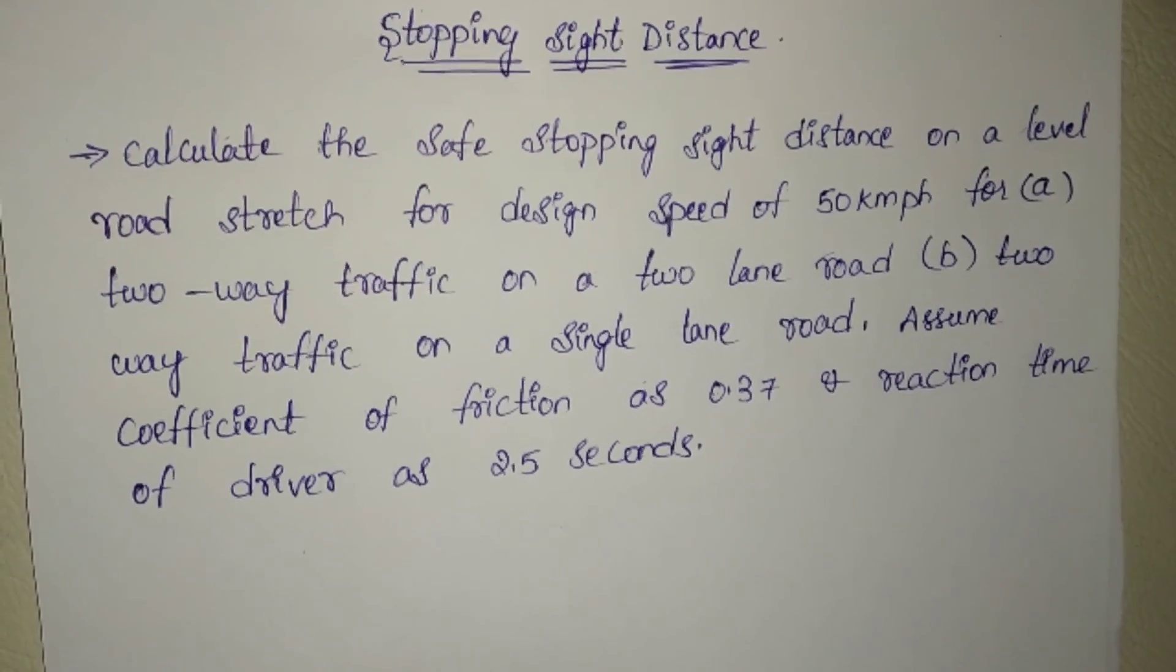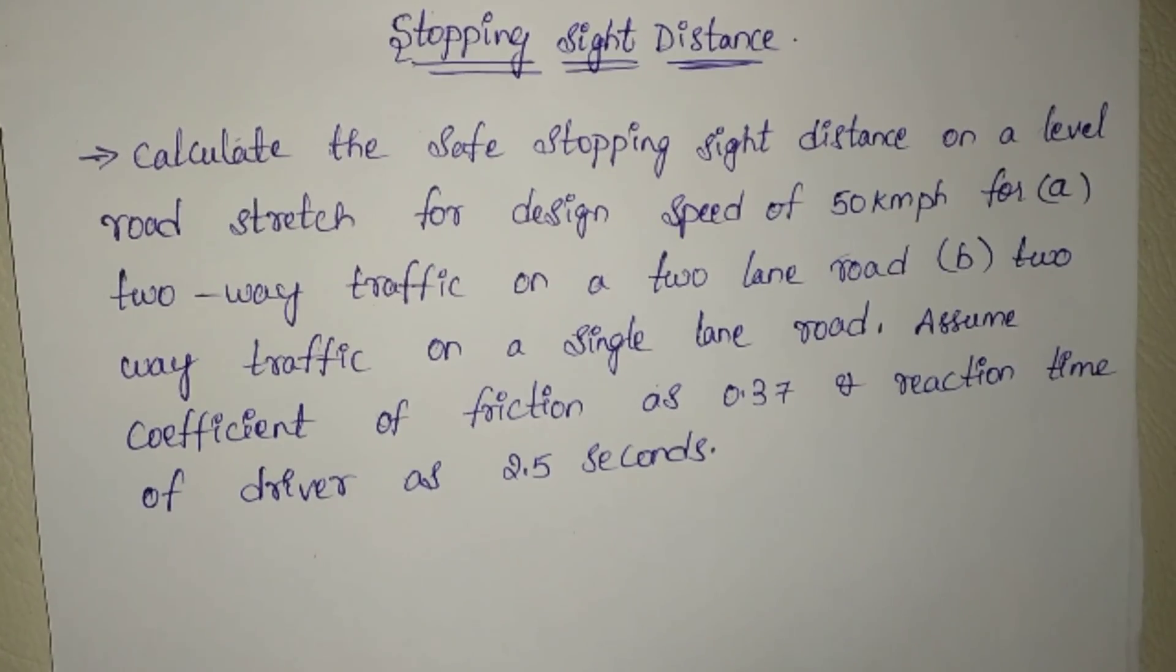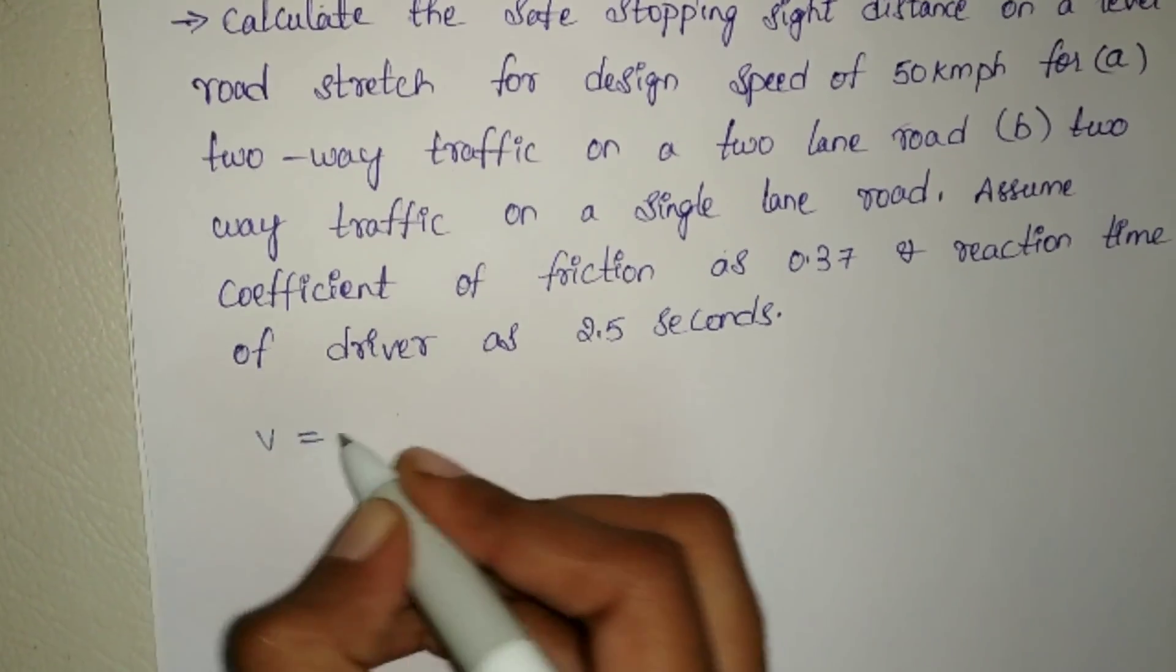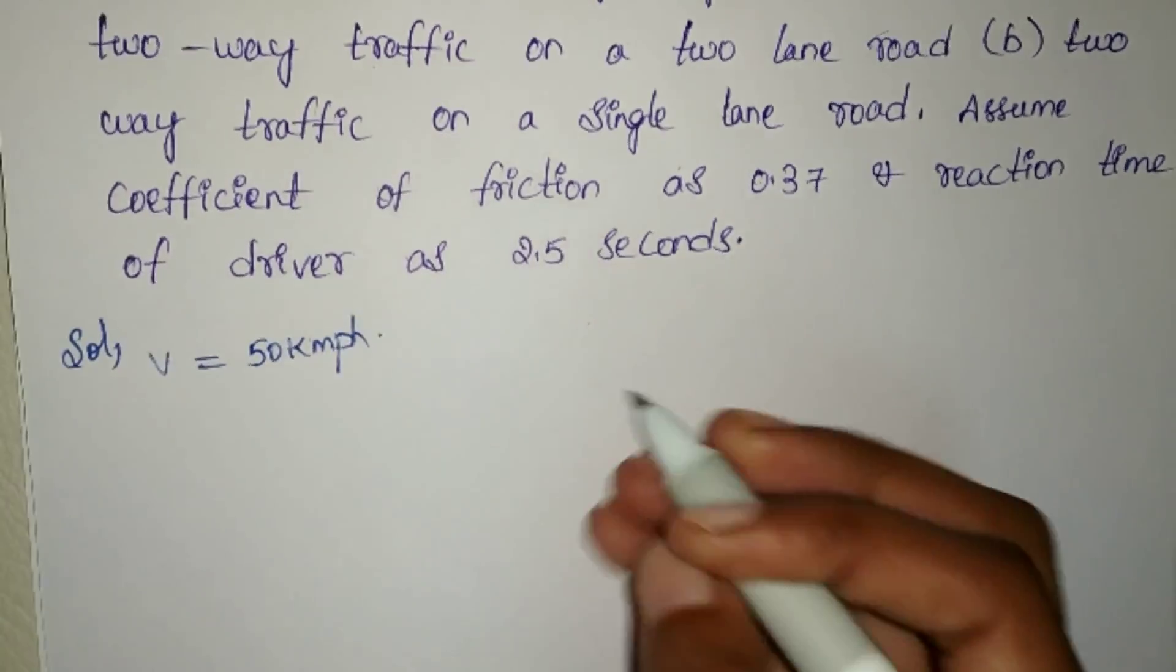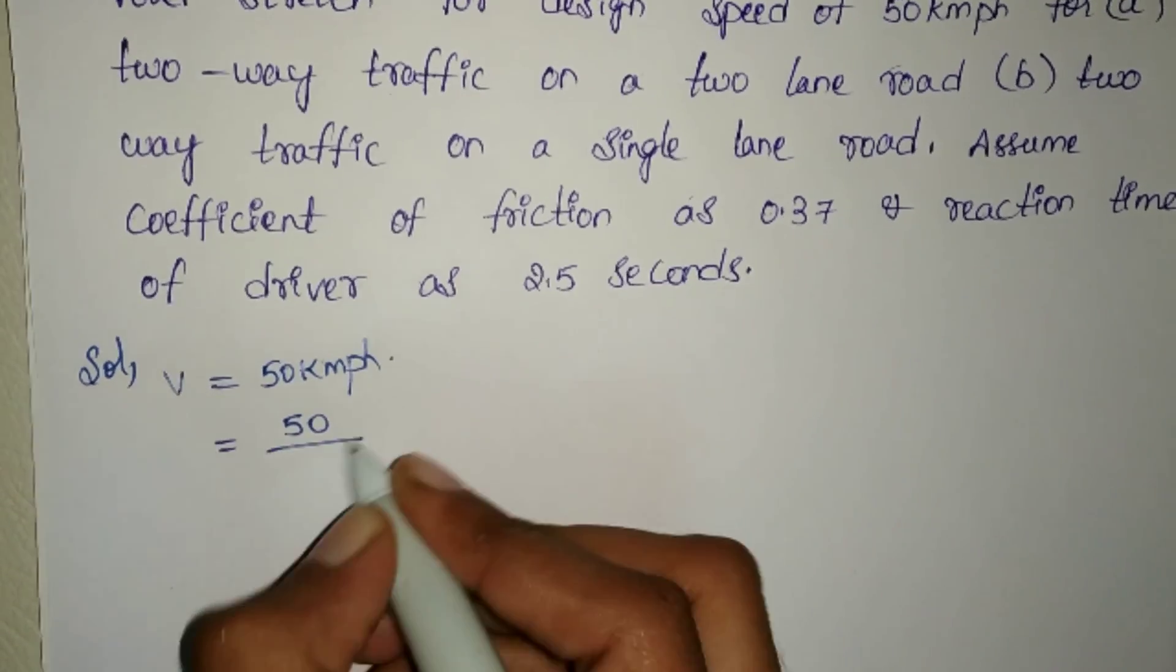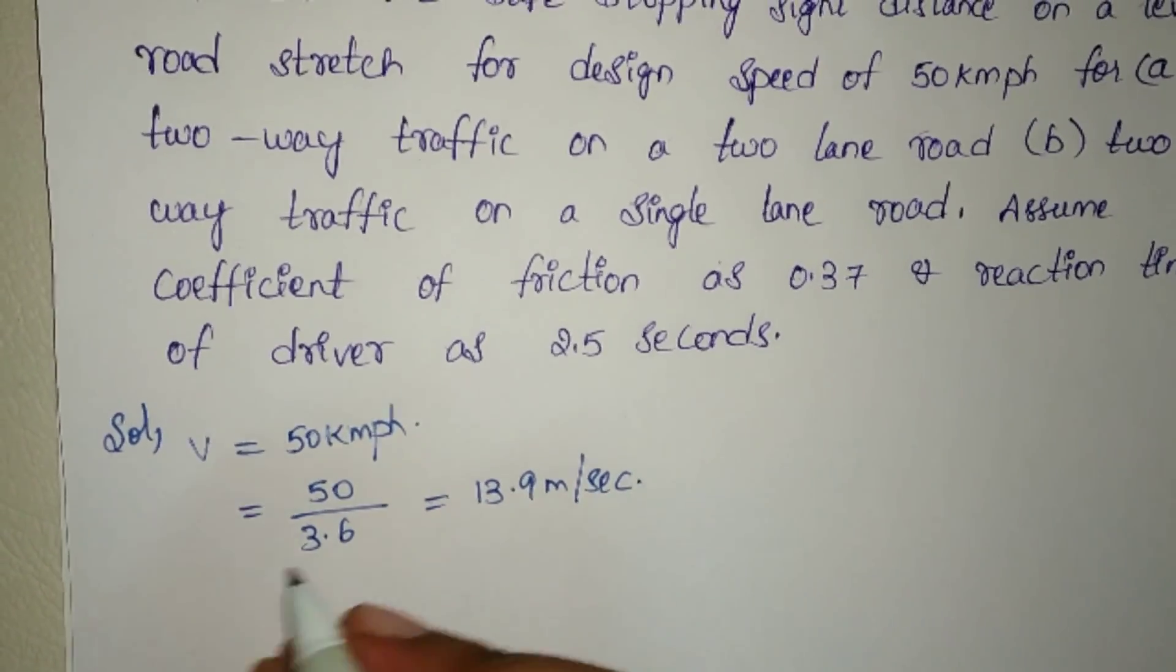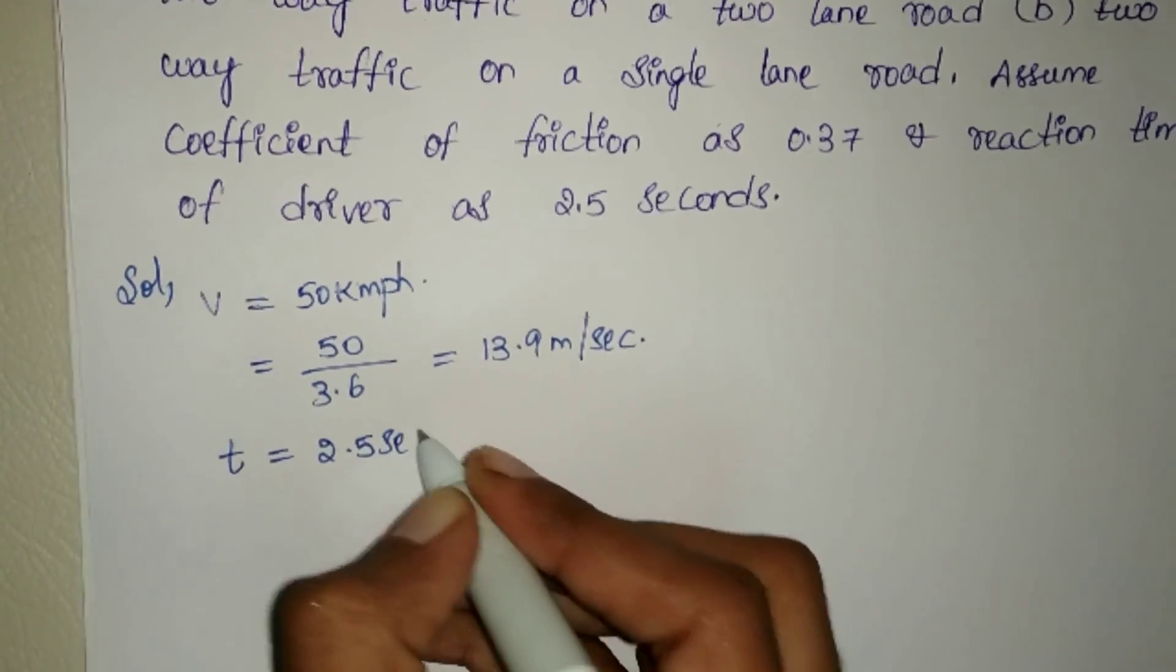The solution: the given data is design speed V is 50 kilometer per hour. We can convert this as V equals 50 by 3.6 equals 13.9 meter per second. Reaction time T equals 2.5 seconds and friction coefficient μ equals 0.37.